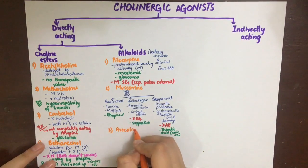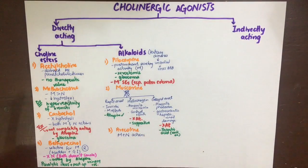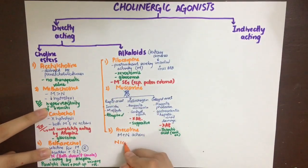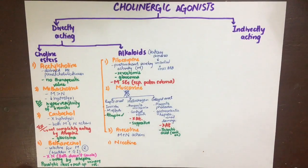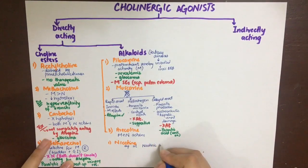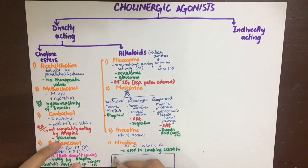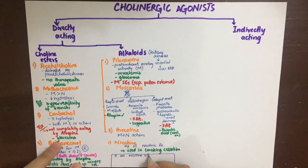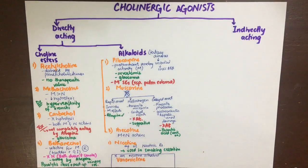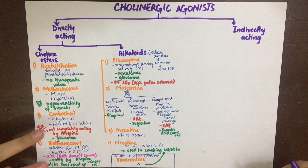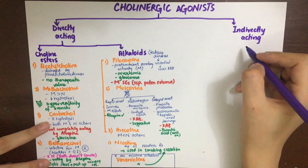The next alkaloid is arecoline, which has both muscarinic and nicotinic actions. Pilocarpine, muscarine, and arecoline all had predominant muscarinic properties. Now, nicotine specifically acts at nicotinic receptors and has no therapeutic value apart from its use in patches and gums for smoking cessation. Another drug, varenicline — which is not a nicotine alkaloid but a partial agonist at nicotinic receptors — is also used in smoking cessation.